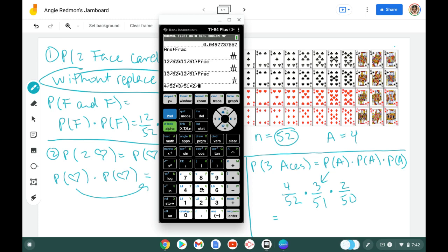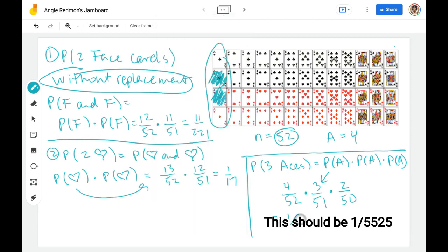Or sorry, 50 cards left. I had 51 before. 50 cards left. But I'm counting down 4, 3, 2 in my numerators. 52, 51, 50 in my denominators. Math convert to fraction. And I get my nice reduced fraction. Really, really slim chance there. One out of 5,525. So 1 out of 5,525.